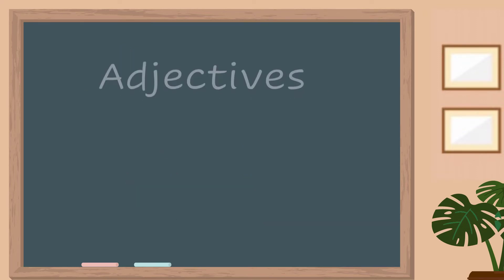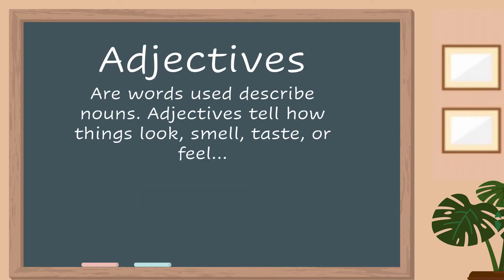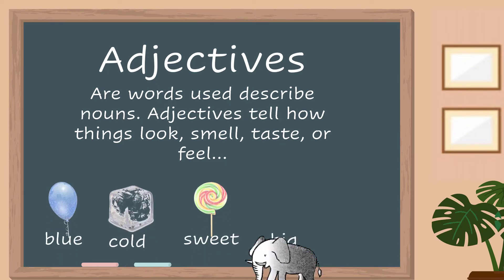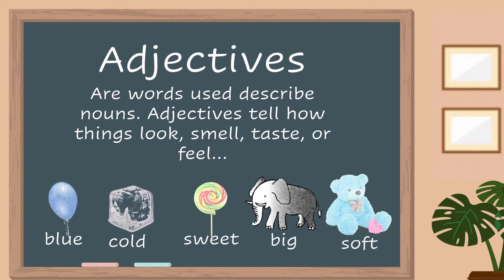Adjectives are used to describe nouns. They tell how things look, smell, taste, or feel. Some examples of adjectives are the words blue, cold, sweet, big, and soft.